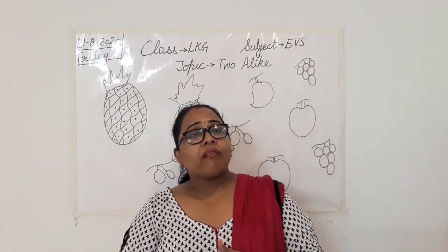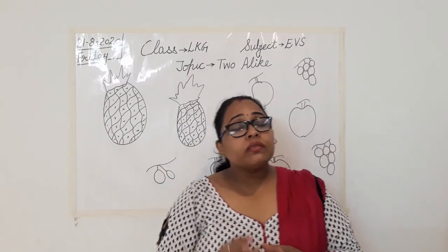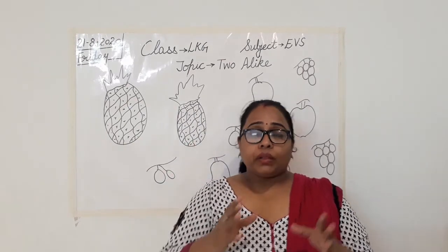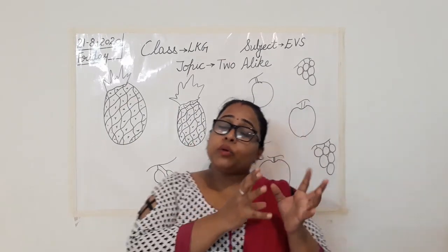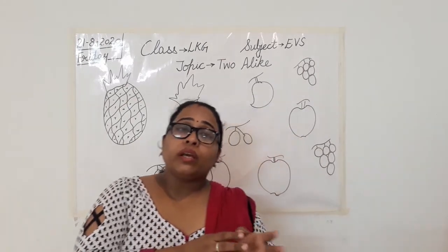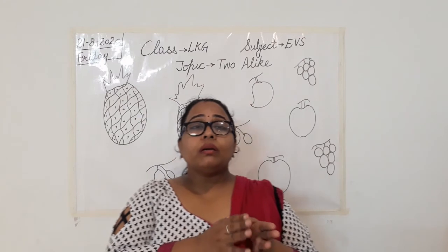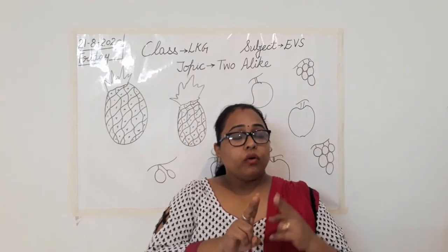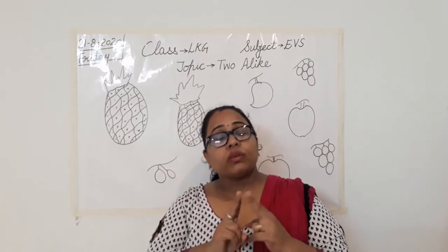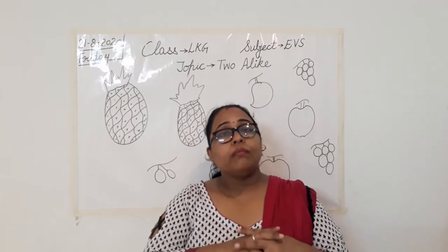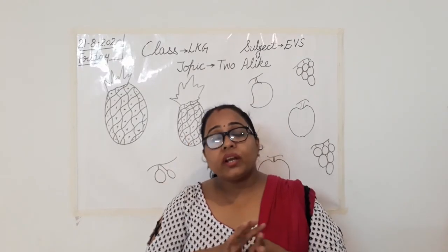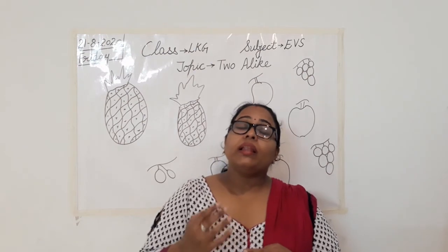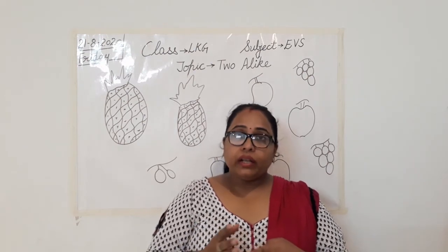Sometimes we have twins — brother and sisters, twin brothers. When we see twin brothers, we cannot differentiate between their face and their appearance. That is called alike.